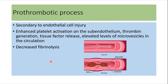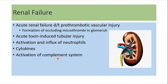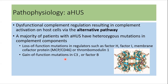The prothrombotic state occurs secondary to endothelial cell injury. This leads to enhanced platelet activation and subendothelial thrombin generation, with elevated microvesicles in the circulation responsible for thrombus formation. There is also decreased fibrinolysis which helps in the progression of the thrombus. Renal failure occurs because of prothrombotic vascular injury due to occluding microthrombi in the glomeruli. Additionally, Shiga toxin endotubular injury, activation and influx of neutrophils, cytokines, and activation of the complement system also play a role in renal failure.